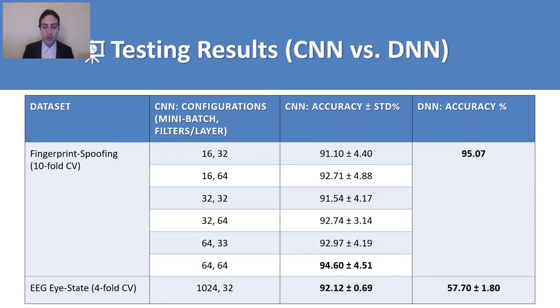So for testing, we actually performed testing and compared against the DNN. And we also tried several CNN configurations, playing with the mini batch size and the filters by layer number. So essentially, our best CNN result for the first dataset was when we used mini batch size of 64 and 64 filters per layer. We got about 94.6 percent accuracy. In comparison, the DNN was at 95 percent, which is almost on the same level.